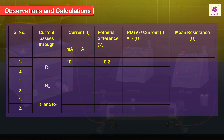Observations and Calculations: For the first set of readings, applying Ohm's Law gives R1 equal to 0.1 divided by the current, equal to 20 ohms.